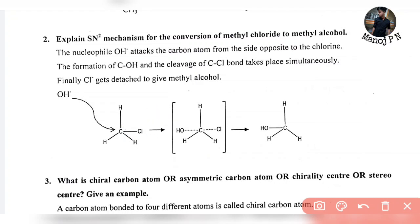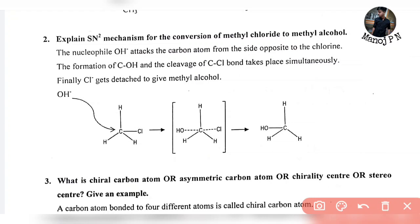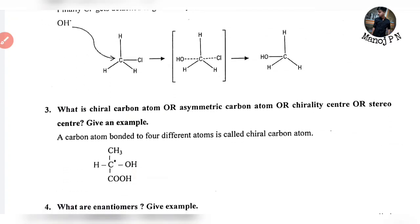The attachment and detachment of OH and Cl will happen simultaneously. So the attachment of OH and the detachment of Cl takes place simultaneously. The formation of C–OH bond and cleavage of C–Cl bond takes place simultaneously. Finally, Cl gets detached to give methyl alcohol. This is called as the essential SN2 mechanism. That's completely enough.